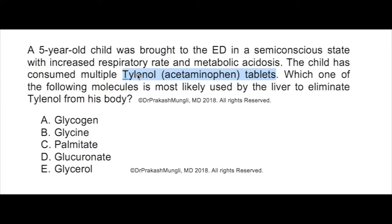In phase one we have the hydroxylation process, and in phase two we have glucuronidation or sulfation. Let's look at the choices. Option A: glycogen. Glycogen is not used in the detoxification process. Glycogen is stored in the liver and serves as a glucose reserve for blood glucose under fasting conditions.